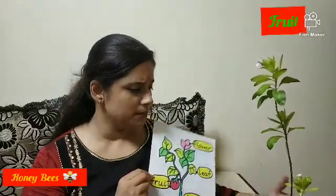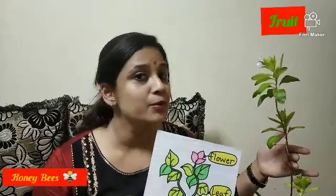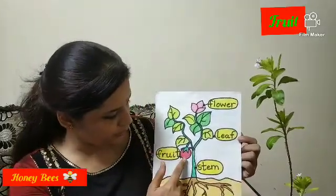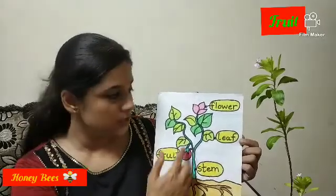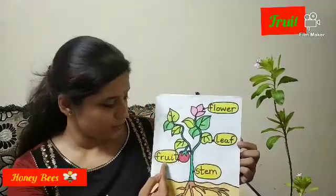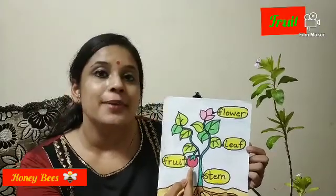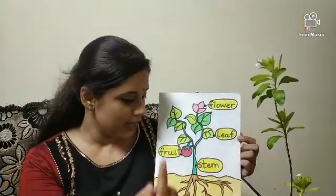This is called the stem of the plant on which leaves and flowers are grown. But in my plant there is no fruit, because this is not a fruit-giving plant. Can you see a fruit over here in the drawing? This is a fruit-giving plant, so there is one fruit which is also a part of a plant.